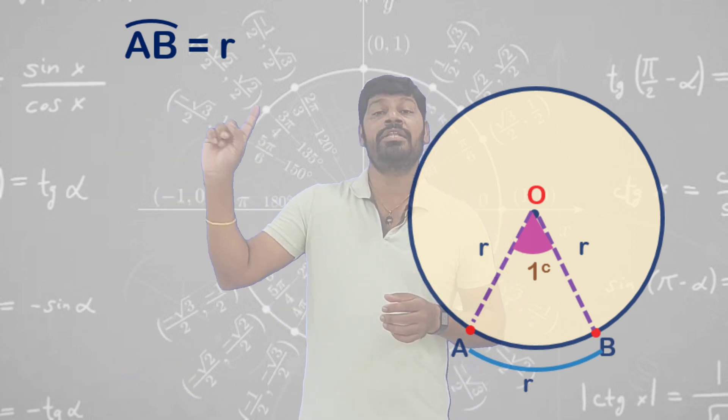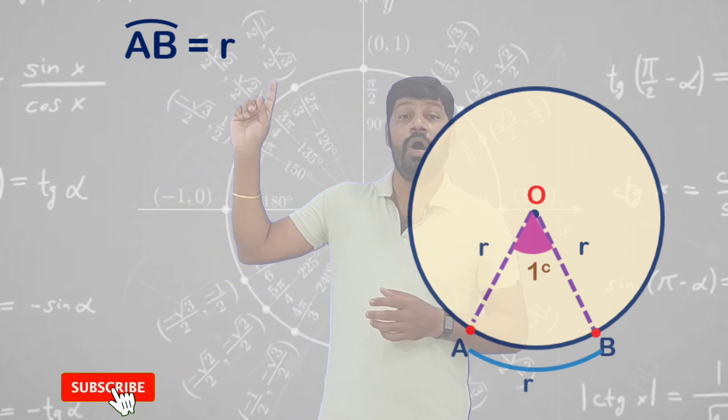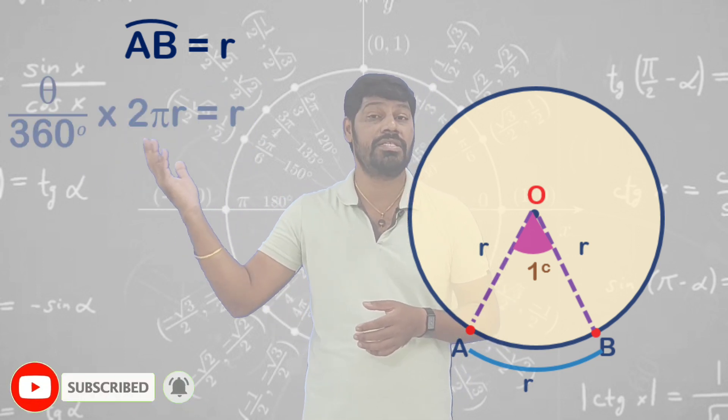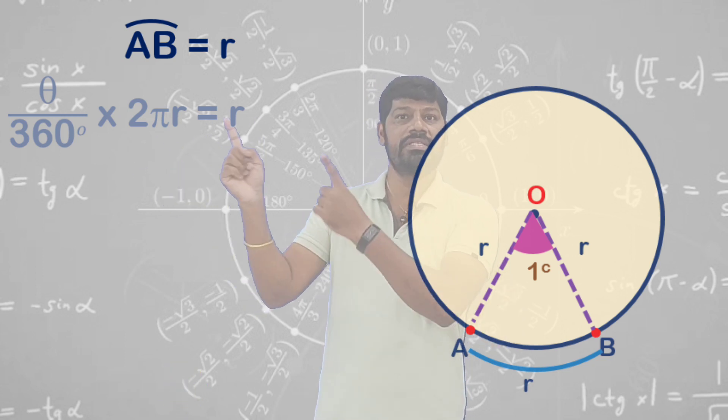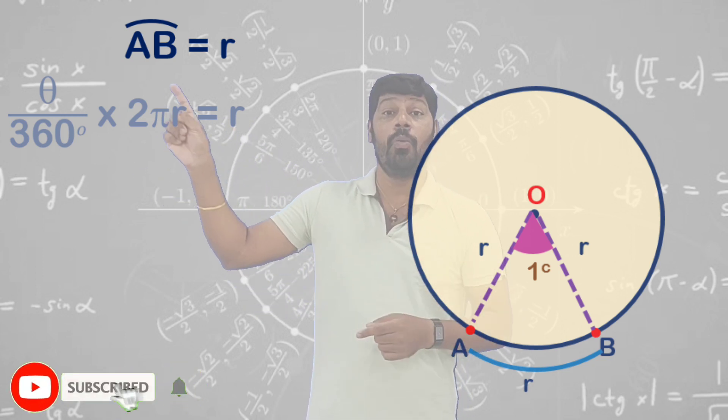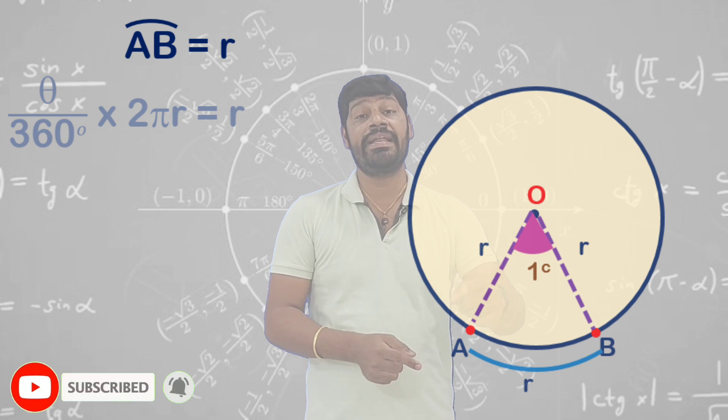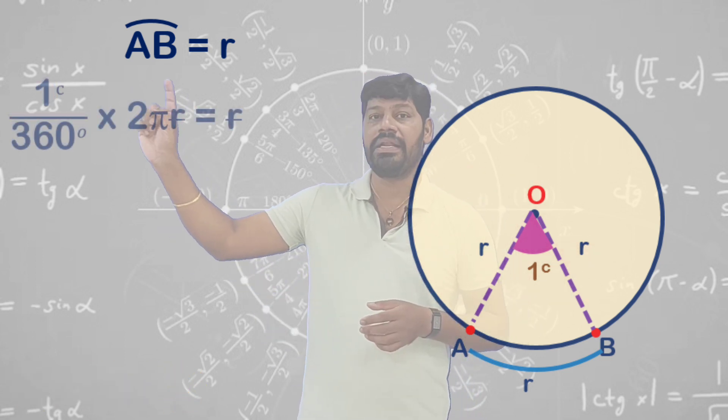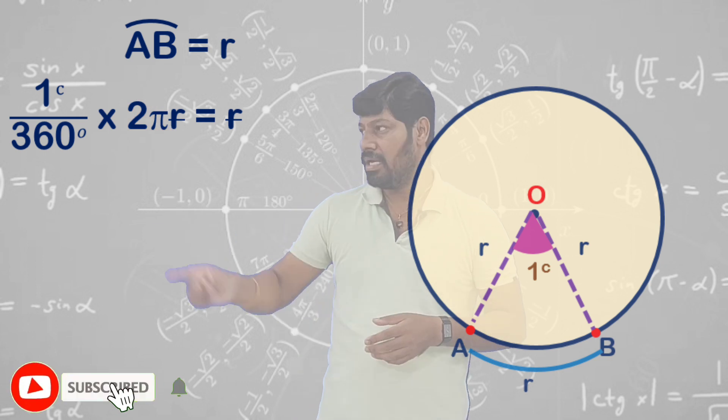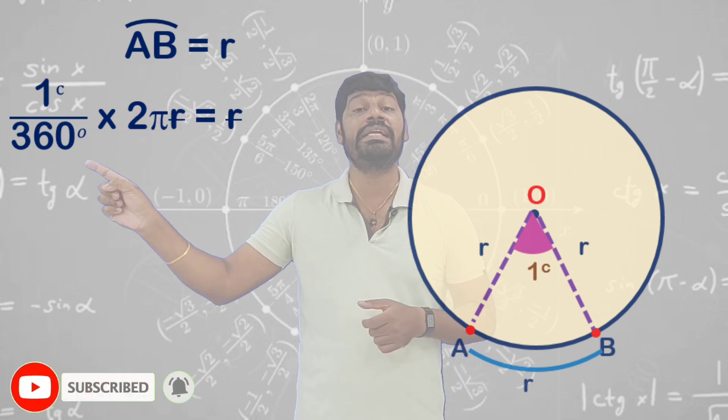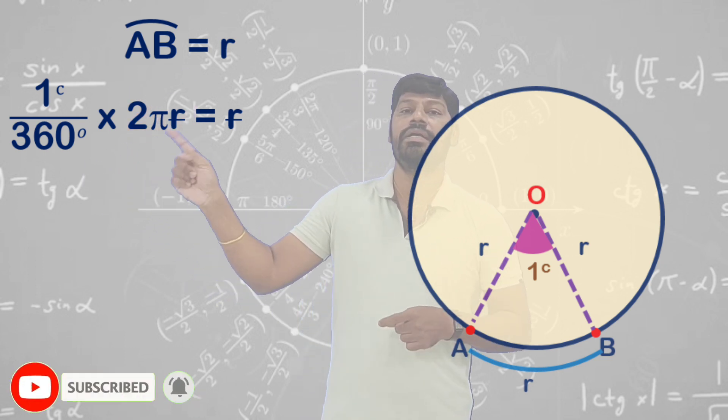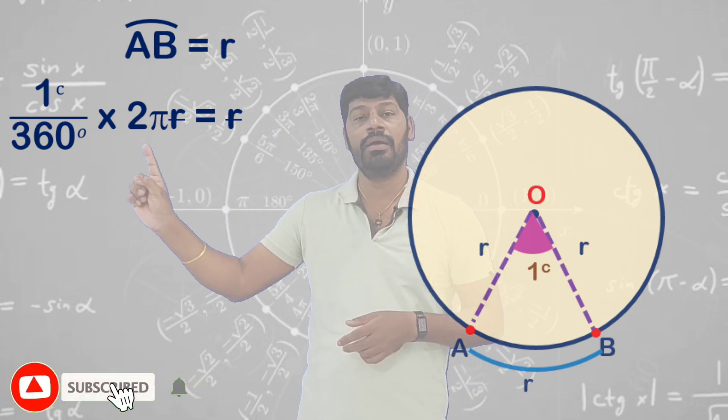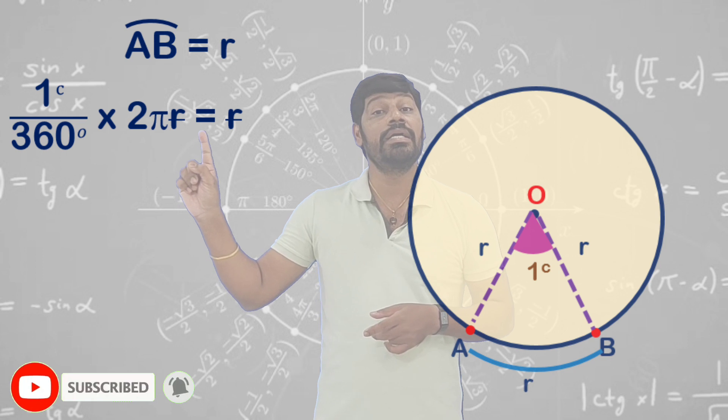So now AB arc length equals radius. What is the formula to calculate the length of arc? That is theta by 360 times 2πr, which equals r here. What is theta here? I said one radian when arc AB length equals radius. So one radian we mention like this: 1 radian divided by 360 degrees times 2πr equals r.